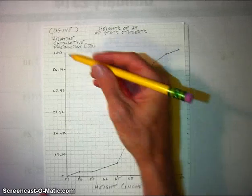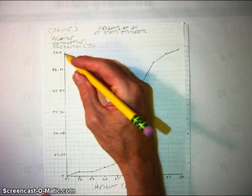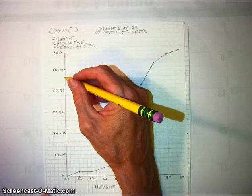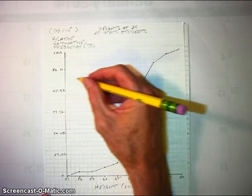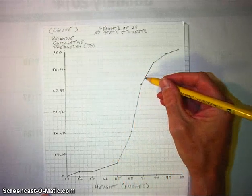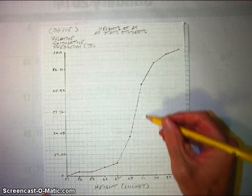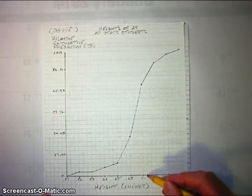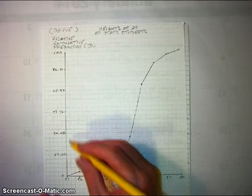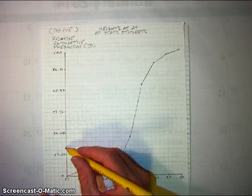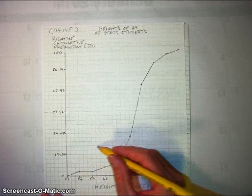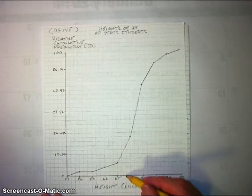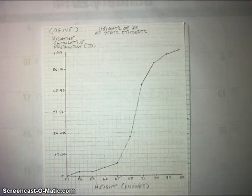If you want to find the third quartile, that's about here on the percentile axis. Go across to the ogive and then go down, and that would be at about 72 inches — the 75th percentile, or the third quartile. If you want to find the first quartile, that would be about here. Go across, hit the ogive, go down — it would be about 67 inches.